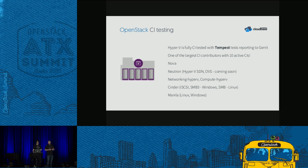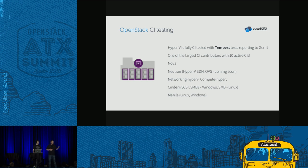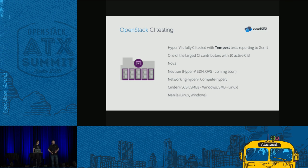We currently have 10 active continuous integration infrastructures with plans to add more for each project we're working on. Some of those are CI for supporting projects like Open vSwitch and Cloud-base Init that we consume as part of OpenStack. We have commitment from our management to continue this CI infrastructure going forward, so we can assure you we're going to keep testing OpenStack with Windows with the same rigor.